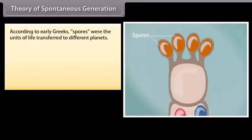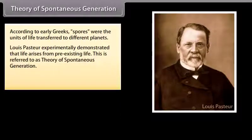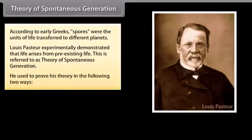Theory of Spontaneous Generation. According to early Greeks, spores were the units of life transferred to different planets. Louis Pasteur experimentally demonstrated that life arises from pre-existing life. This is referred to as theory of spontaneous generation. He used to prove his theory in the following two ways.